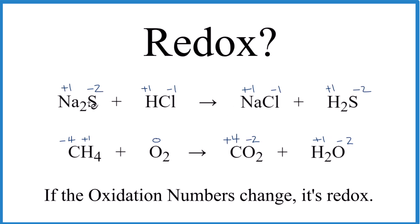In the first reaction, we have Na plus 1, sulfur minus 2 on both sides. Hydrogen stays the same and chlorine stays the same. This is not a redox reaction. This is a double displacement, which aren't redox.